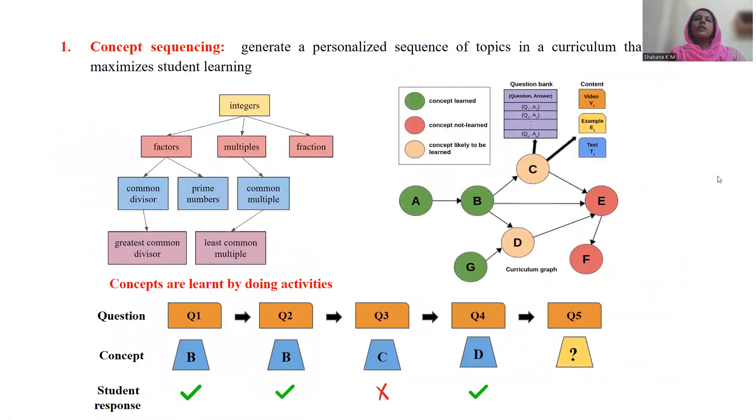The first problem that we have studied is that of concept sequencing, where the aim is to generate a personalized sequence of topics in a curriculum that maximizes student learning in a learning by doing setting where concepts are learned by doing activities. The objective here is to determine at each time step the concept that the student tends to learn faster and then provide a question or problem based on this concept. This is determined based on the prerequisite relations between various concepts as well as the history of correctness of student responses to the other questions that were presented previously.